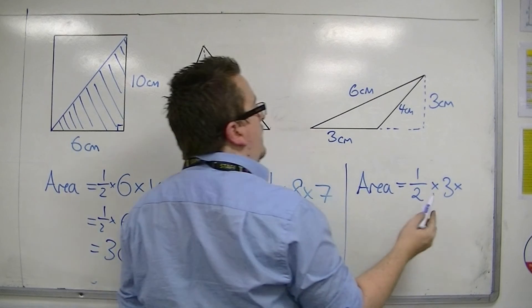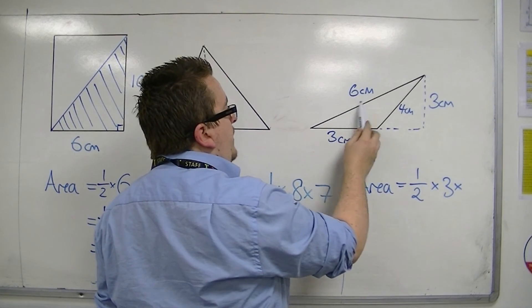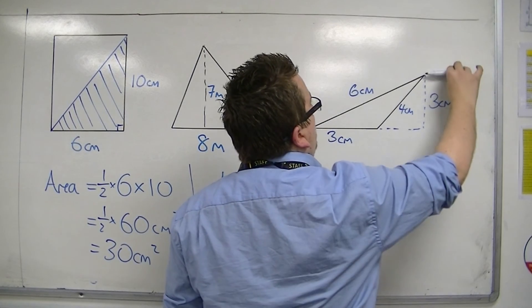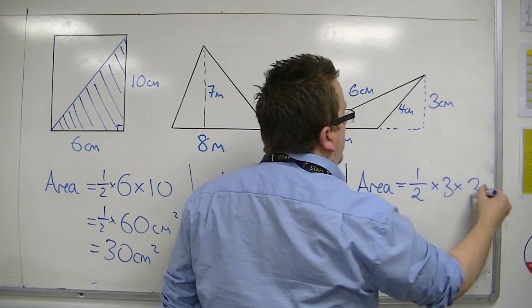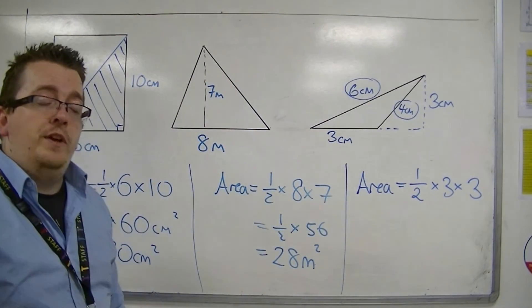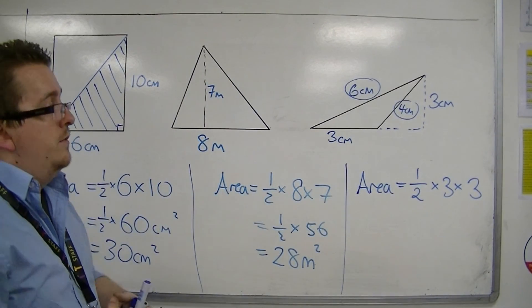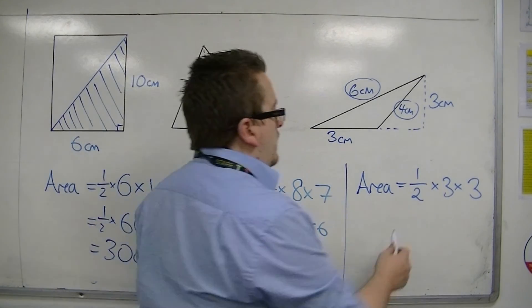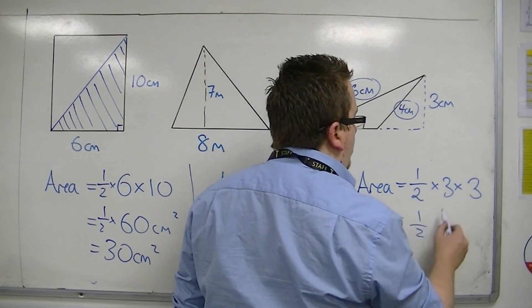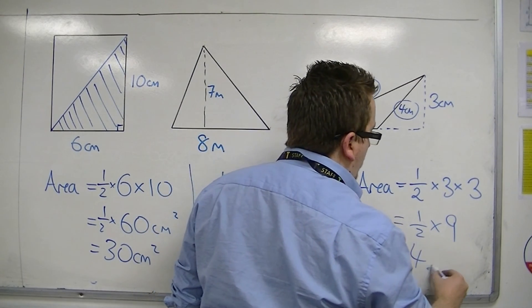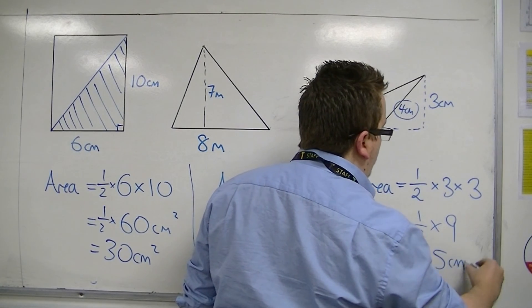The height isn't the 6 centimetres, it's not the 4 centimetres, it's the 3 centimetres—the actual vertical height of the shape. So the 4 and the 6 are there to throw you off and to confuse you and to test whether you know what you're doing. So actually, what we have is a half of 3 times 3, so 9. A half of 9 is 4.5 and we're in centimetres squared.